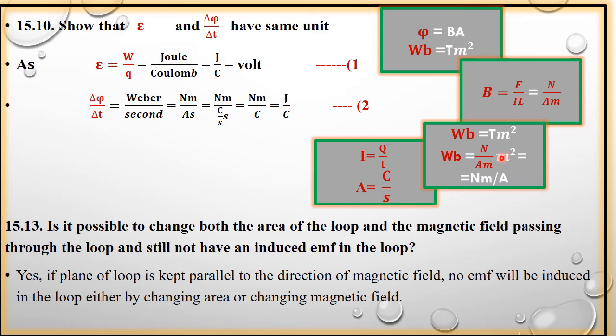Ab students, ek meter iske saath cancel ho gaya. This is equal to Newton meter per ampere. Acha. Ab yahaan se aapne Weber ko define kar liye. Yahaan se aapne flux ke unit ko define kar liye. Iske ki jagah aap likhenge Newton meter per ampere. Aur iska unit kya hai time ka? Second. Ab, mazid ampere ko define karte hain. Ampere ka unit kya hai?